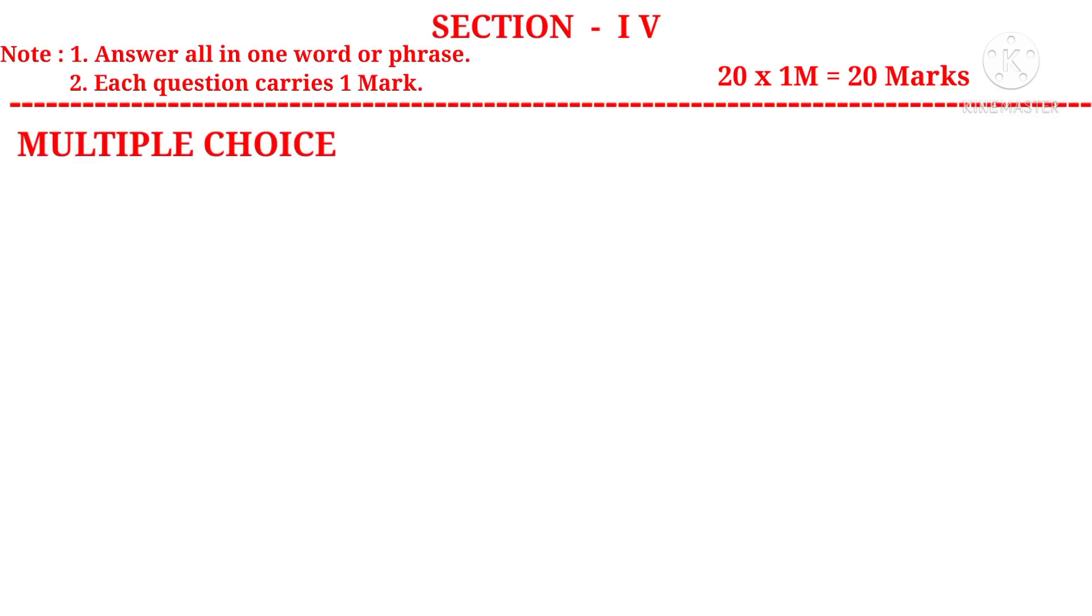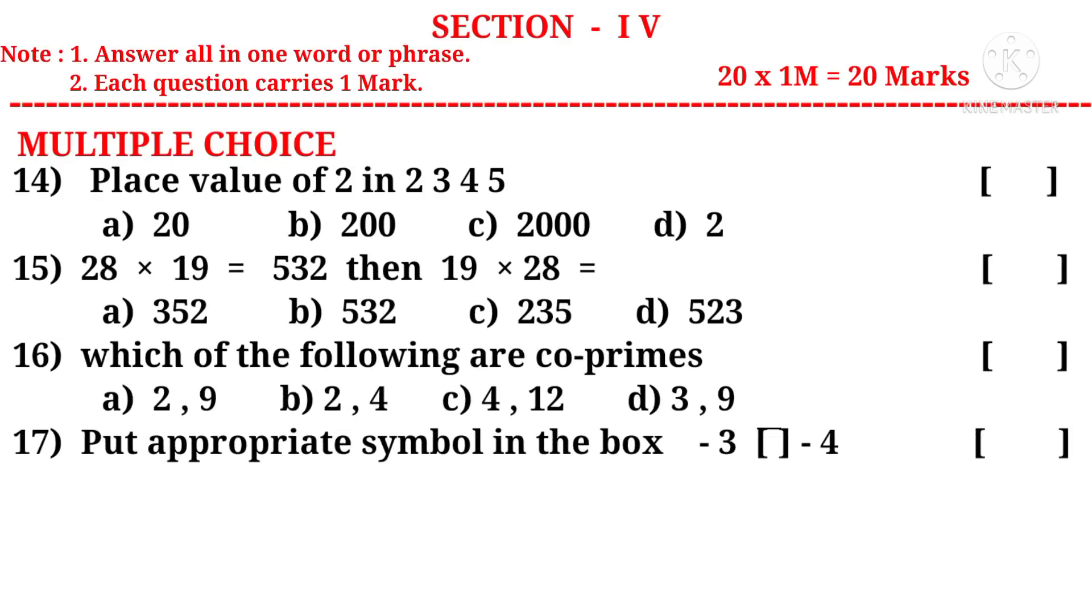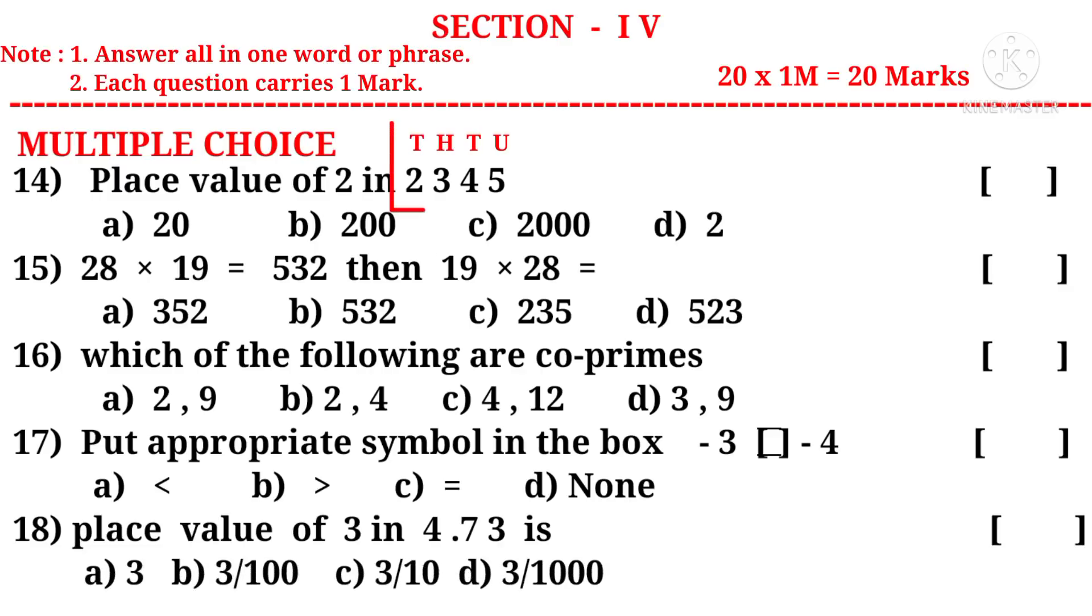Let us take multiple choice. Fourteenth question: Place value of 2 in 2345 is. Write the place values: units, tens, hundreds, and thousands. Two is in thousands place. So 2 into 1000 is equal to 2000. So the correct choice is C. Fifteen: 28 into 19 is 532. Then 19 into 28 is equal to. Using multiplicative commutative property, the product is same, 532. So the correct choice is B.